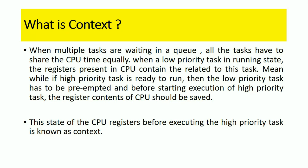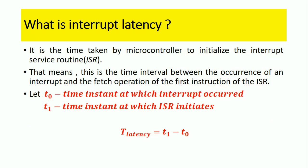Meanwhile, if a high priority task is ready to run, then the low priority task has to be pre-empted. Before starting execution of the high priority task, the register contents of the CPU should be saved. This state of the CPU registers before executing the high priority task is known as context.